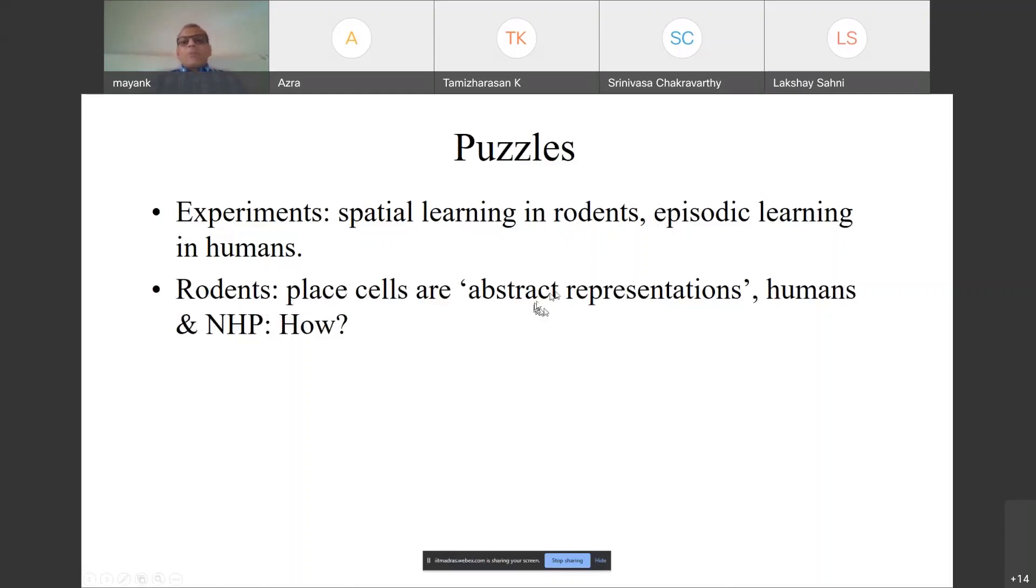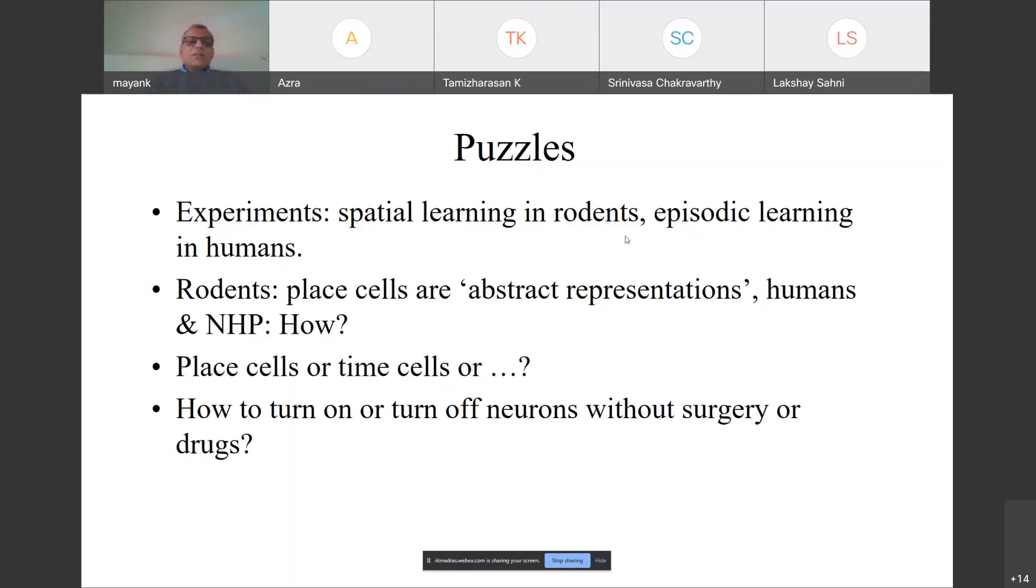Rodents are supposed to have abstract representation of space and so are human and non-human primates. How are our brains representing space? What is in fact space? A lot of research on hippocampus because of these clinical and scientific and engineering reasons. People have found that the same neurons which are place cells sometimes behave like time cells, sometimes behave like episode cells, sometimes behave like vector cells. So what is this? How is the same neuron doing different things? Whereas the visual cortical neuron does exactly the same thing.